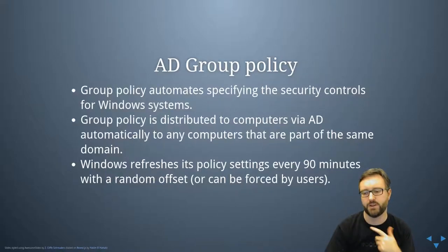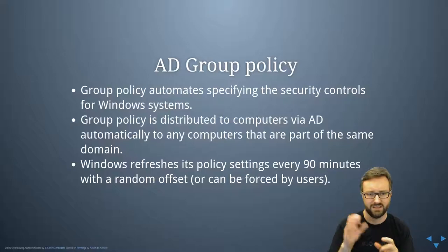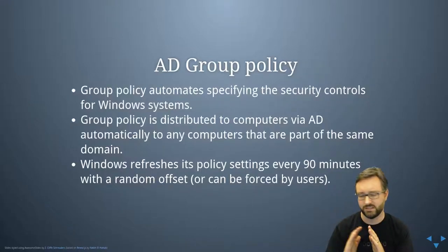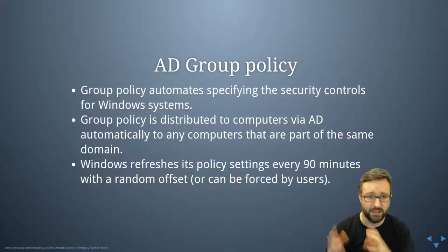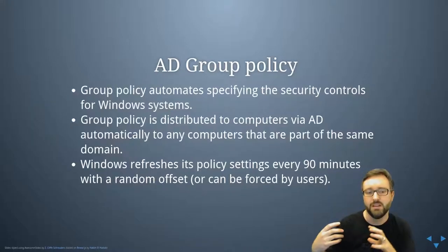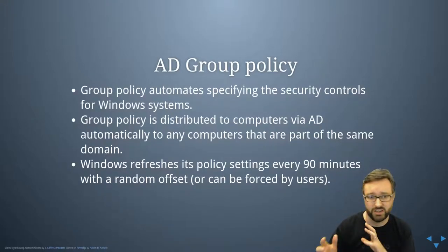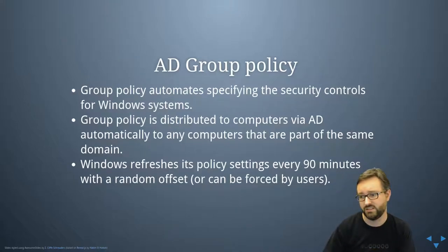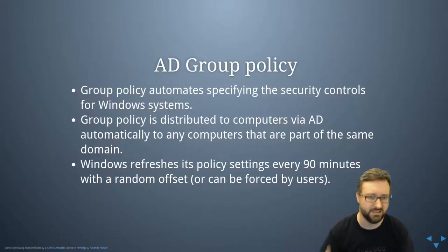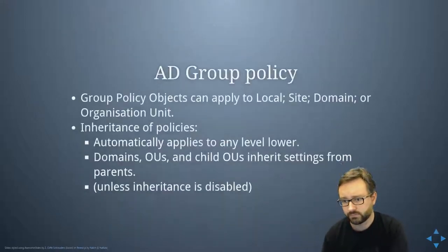Group Policy refreshes settings every 60 minutes with a random time offset so it doesn't flood the network all at once - effectively spreading the refresh across roughly 90 minutes. It's constantly checking whether policy changes are being pushed out to all the different systems. You can force a refresh manually as a user, but it will also refresh itself automatically.